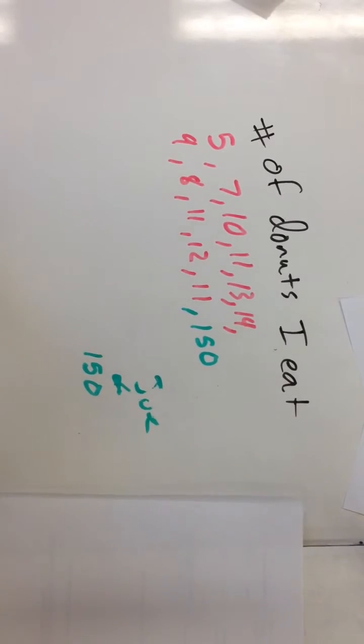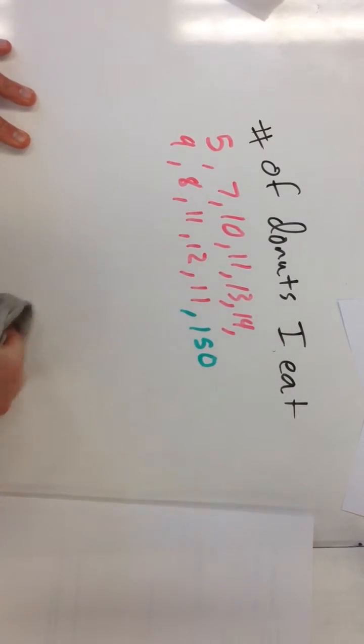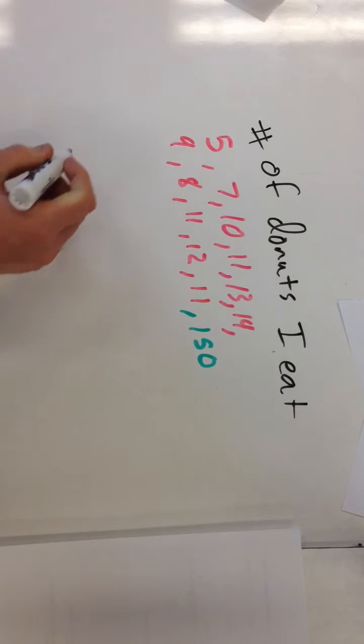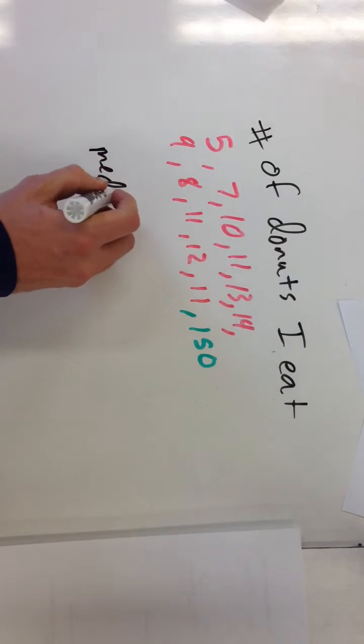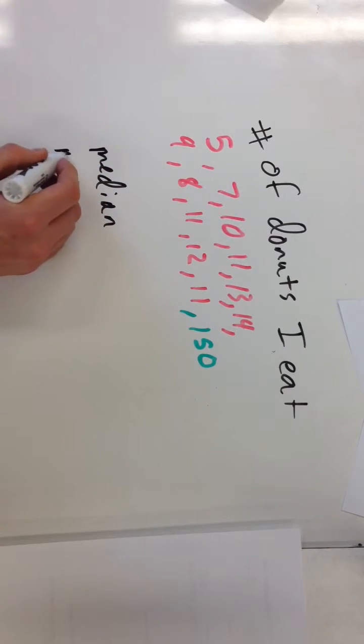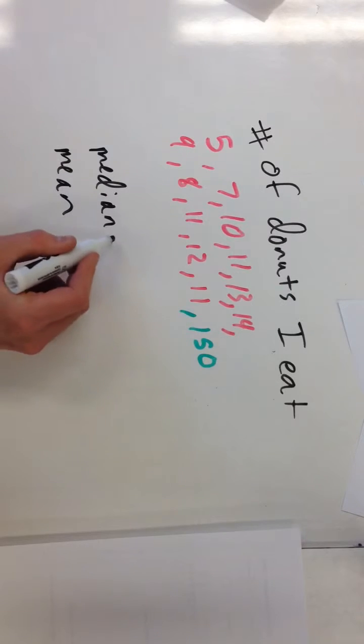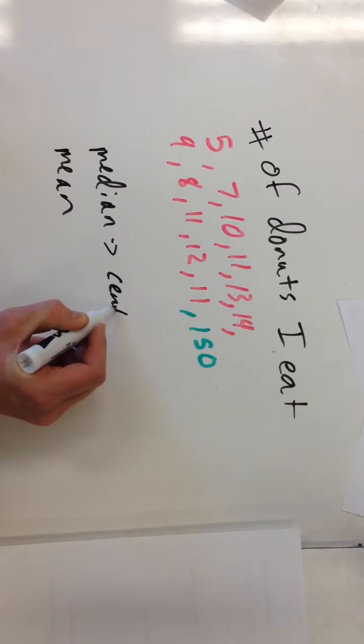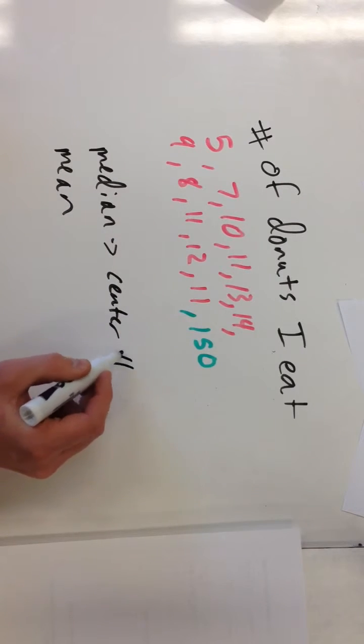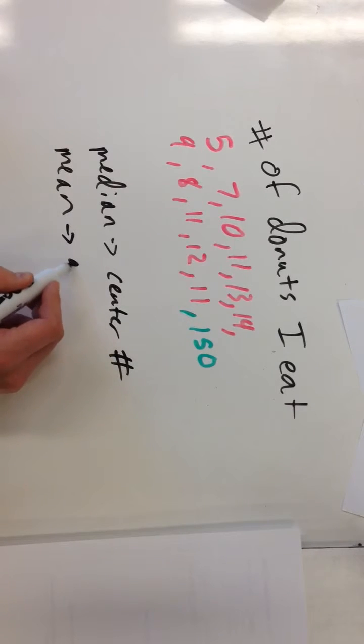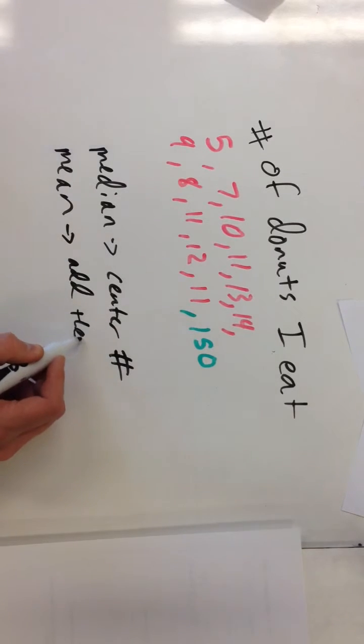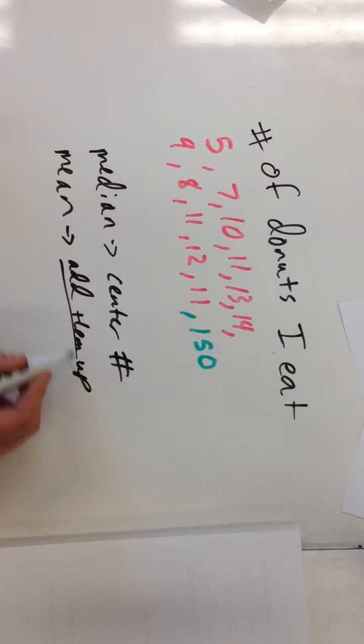So the question is, what's going to be affected most by this? Is the median of this data going to be affected, or is the mean? So the median is the center number, right? And the mean is we add them all up and then divide by the total number of them.